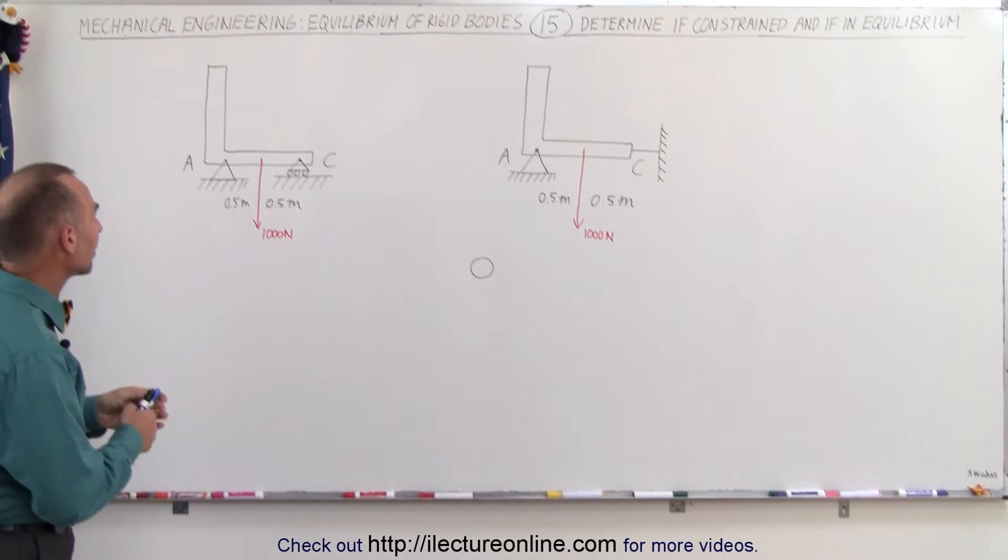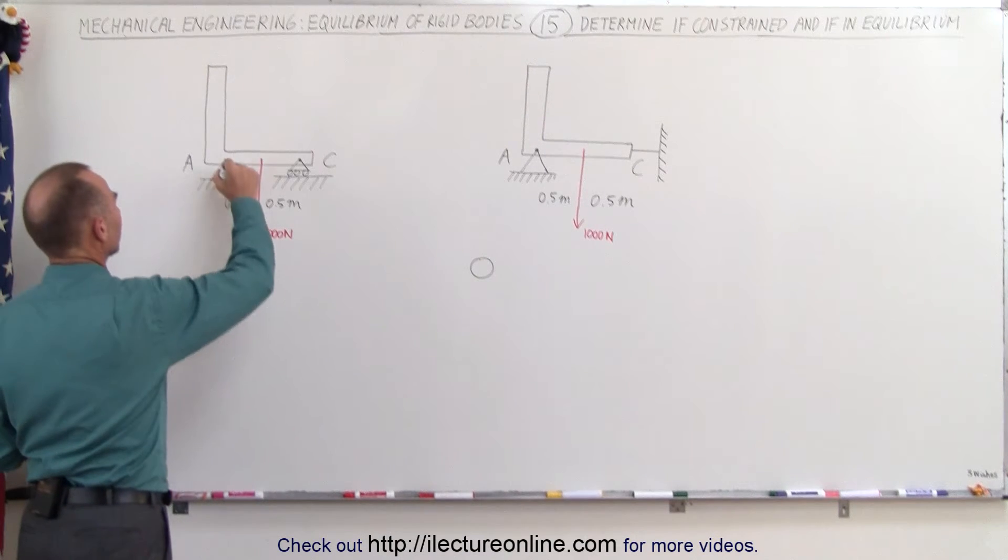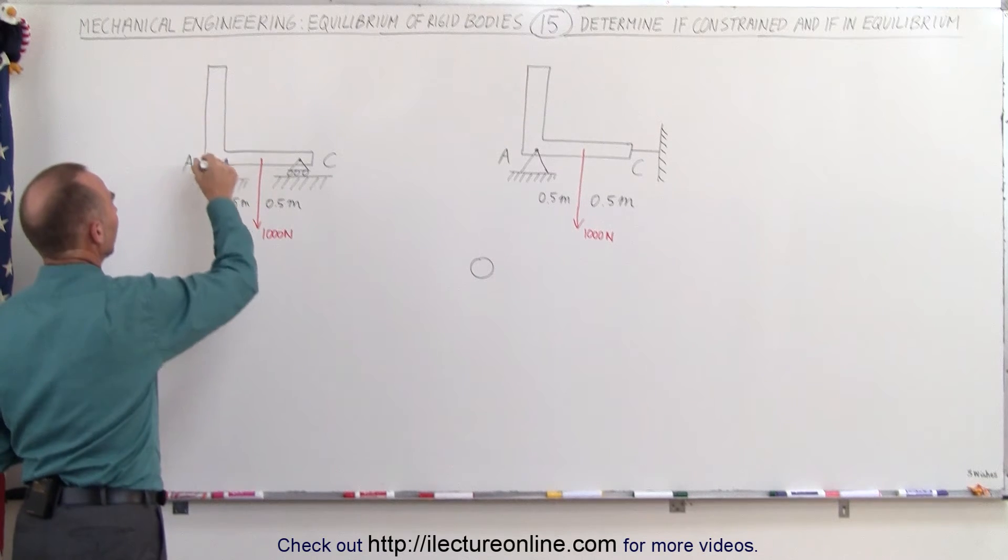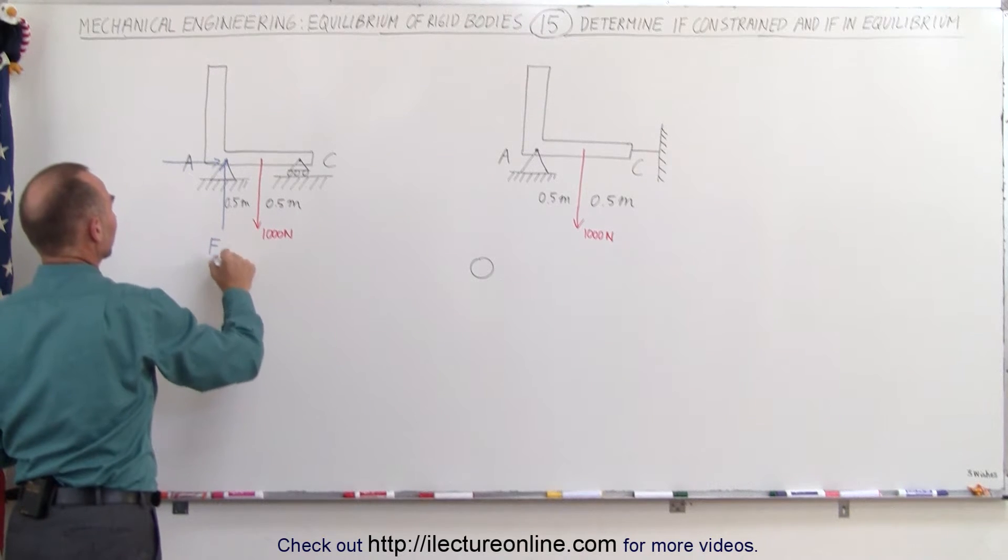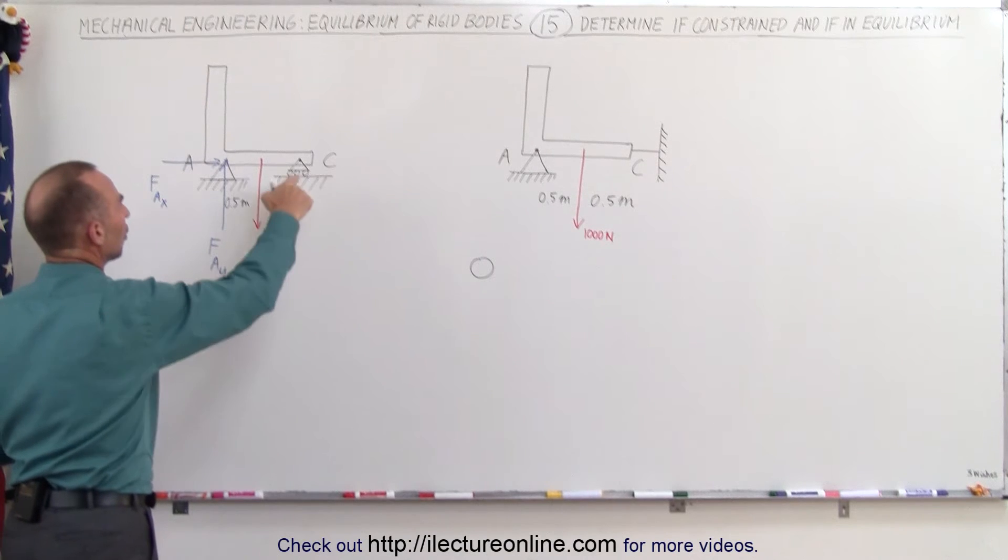Looking at our first example, we see that the forces can be both upward counteracting the weight and the force in a downward direction, and there can be the force in this direction. So we have force A in the vertical direction and force at A in the horizontal direction.